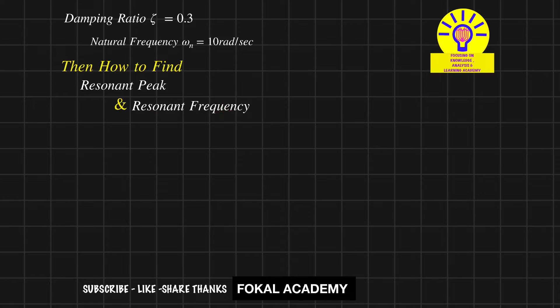So first of all, recall the relation between the resonant peak and damping ratio. That is resonant peak Mr equal to 1 by 2 zeta into root of 1 minus zeta square. Now substitute zeta value.